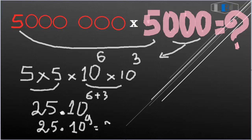25 times 10 to the 9. That's 25 followed by nine zeros: 25,000,000,000. This is the correct answer.